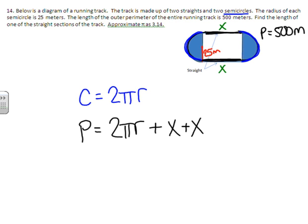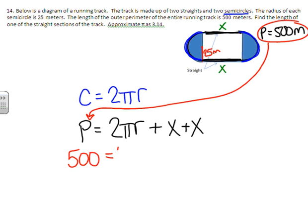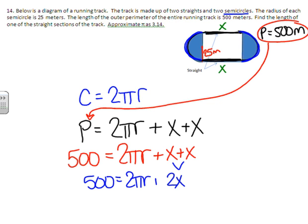The perimeter of the entire thing is the circumference, the 2 pi r, plus this side and this side. So plus X plus X. So if we add the two half circles with the two straight pieces, we get the total perimeter. But we know what the perimeter is. We know the whole thing is 500 meters. So I'm going to replace P with 500. I can also combine some other things.